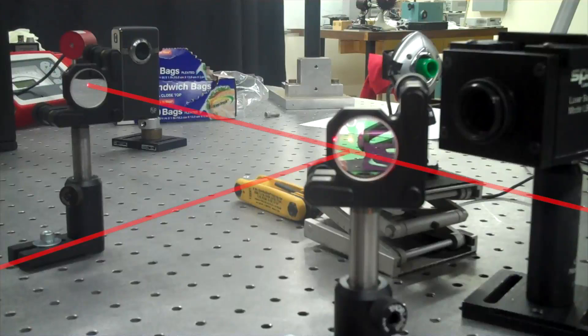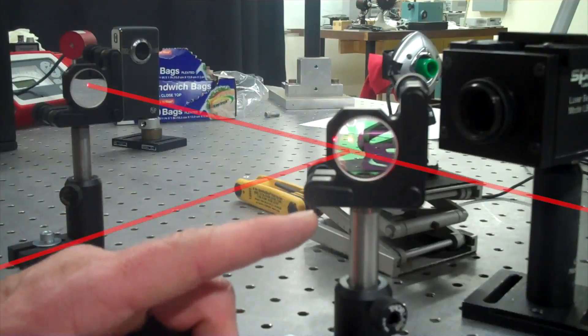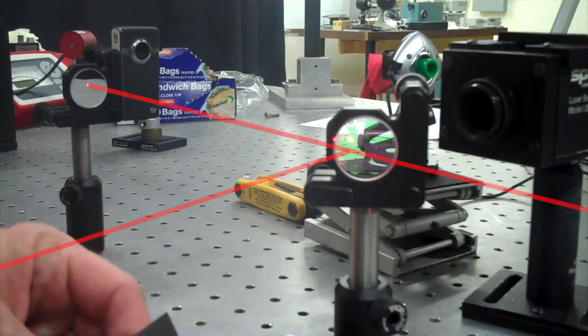One thing to be aware of when setting up the beam splitter in a Michelson interferometer, particularly when you have a plate beam splitter in a traditional mirror mount, is that while the beam splitter itself may have a fairly large clear aperture,